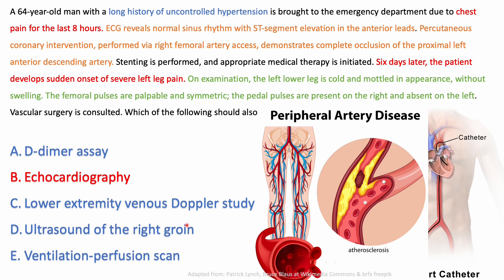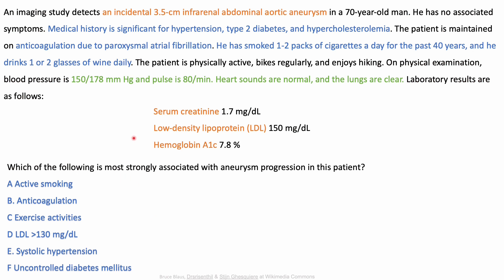The next best step is echocardiography. Why not ultrasound of the right groin? Because the femoral access was on the right but the problem is with his left leg. Also, femoral pulses are palpable and symmetric, so no femoral pathology is implicated. This is not DVT, so D-dimer and venous Doppler are not indicated. He is not suffering pulmonary embolism, so V/Q scan is not appropriate.